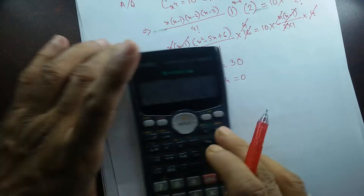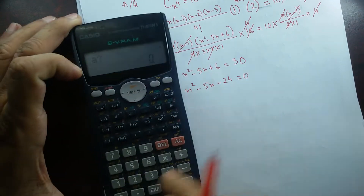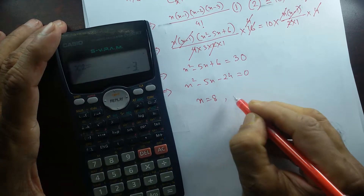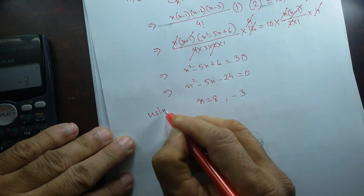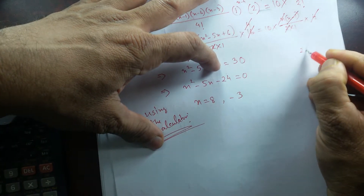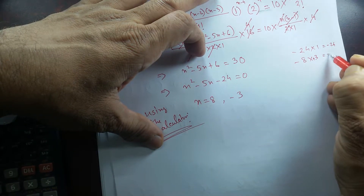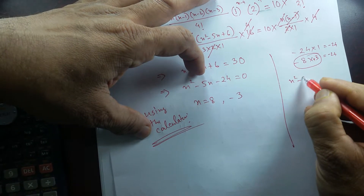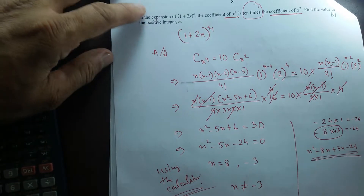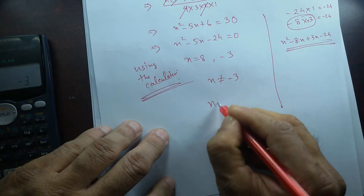I can use the calculator to solve this quadratic. It's a degree-2 equation with one unknown: a equals 1, b equals negative 5, c equals negative 24. Using the calculator, n equals 8 or n equals negative 3. Since in Cambridge CIE exams n must be a positive integer (not a fraction and not negative), n cannot be negative 3. Therefore n equals 8.